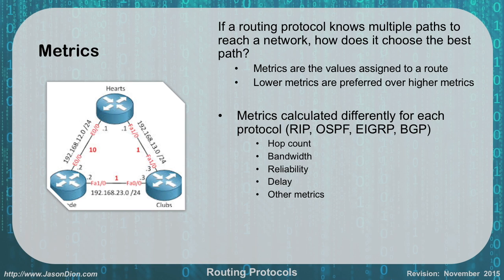Metrics: if a routing protocol has multiple paths to reach a network, how does it choose the best path? It's based on administrative distance and metrics — lower metrics are better than higher metrics. Using OSPF, you'd choose the path with a cost of 1 over a cost of 10, based on link state. Metrics are calculated differently for different protocols. RIP uses hop count; OSPF uses bandwidth; EIGRP and BGP use bandwidth, reliability, delay, or other metrics. For the exam, remember: RIP uses hop count, and OSPF uses link state and bandwidth.